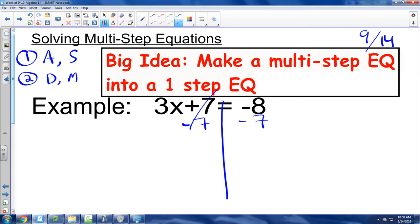Now we have seven minus seven, it's gone. And we have 3x is equal to negative 15. Now this is a one-step equation. So have we accomplished the big idea? Yes, we have.